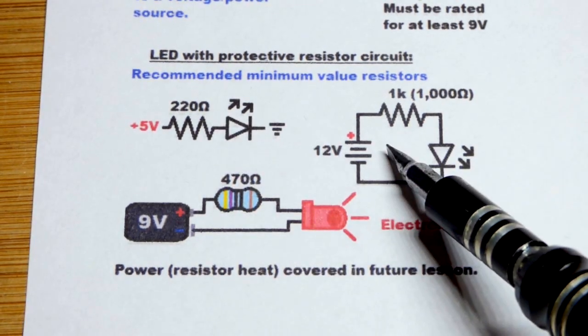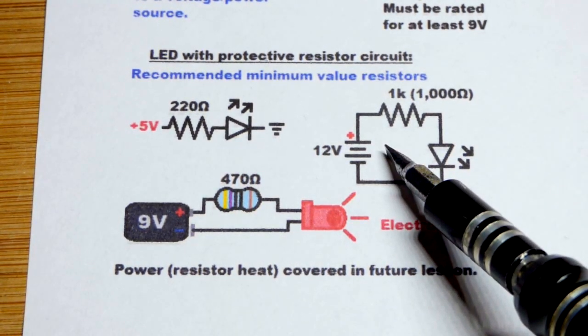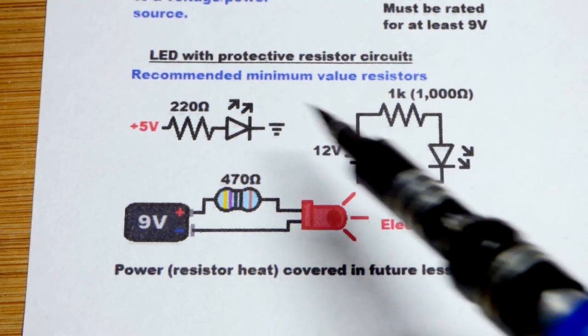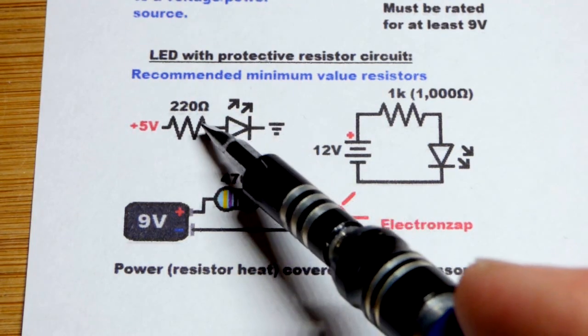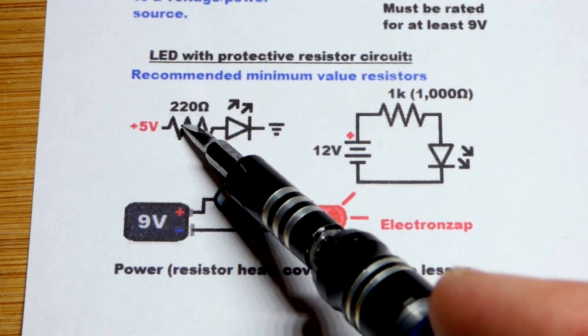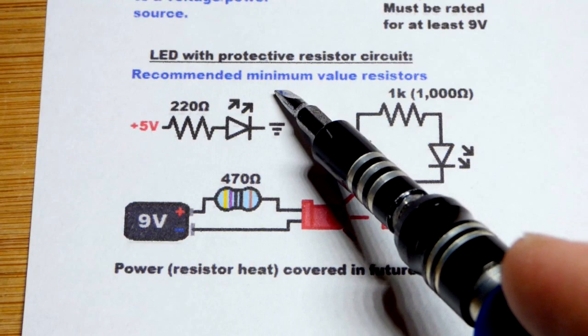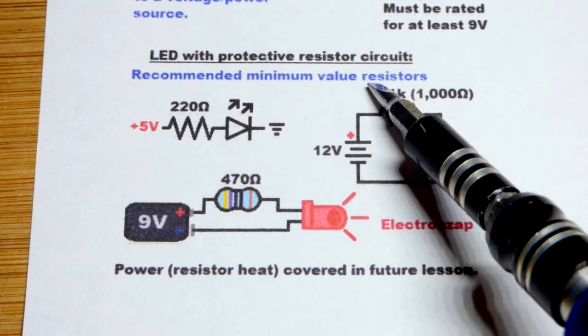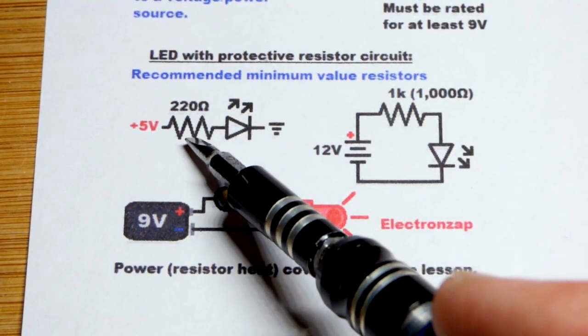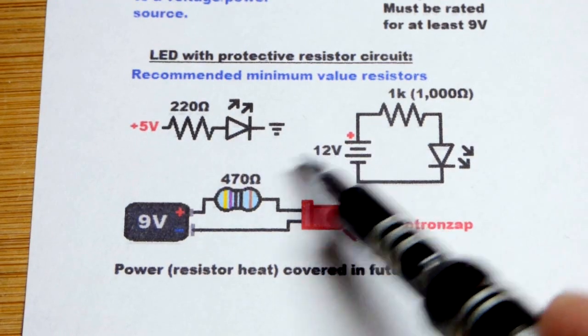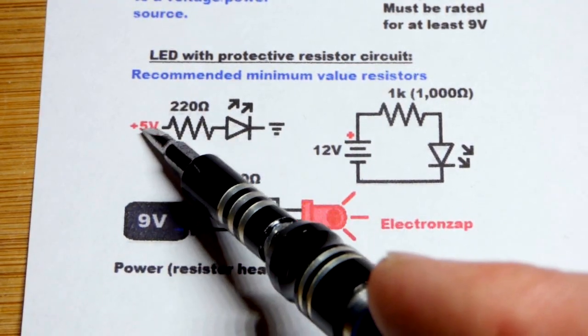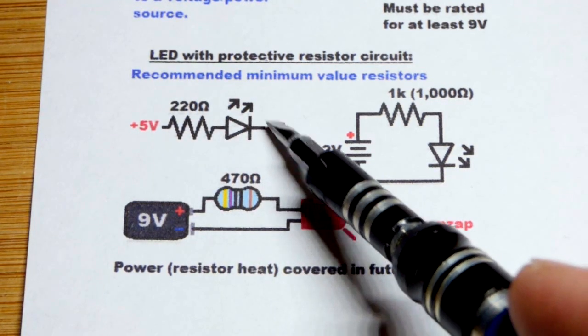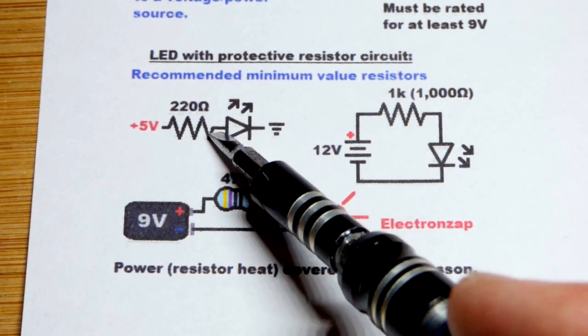We got a pictorial here and then a couple different versions of schematics. One thing to note is this one represents a 5-volt power supply lighting an LED. The LED needs a resistor to protect it. These are the recommended minimum value resistors that I recommend for the voltage you see there—220 ohms for 5 volts.